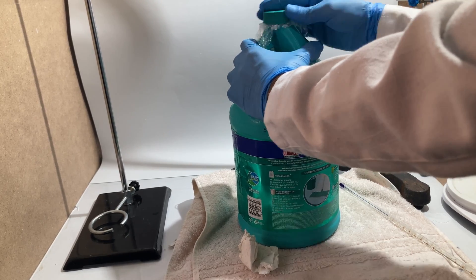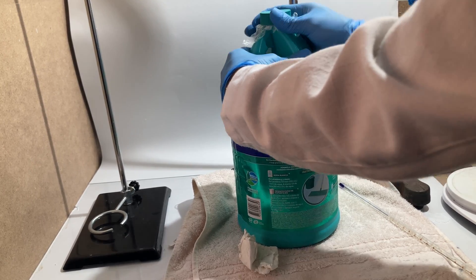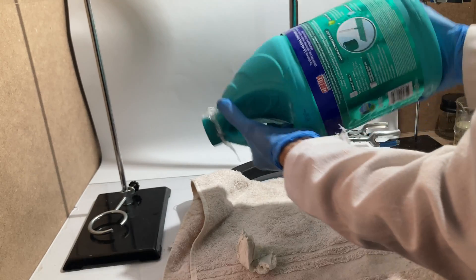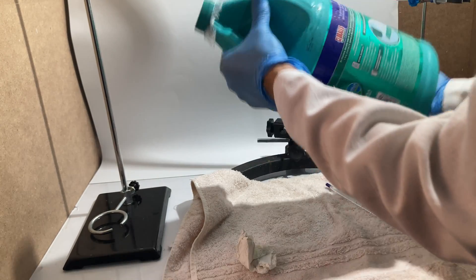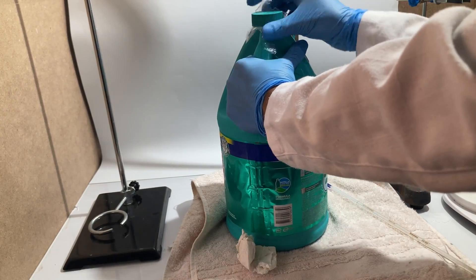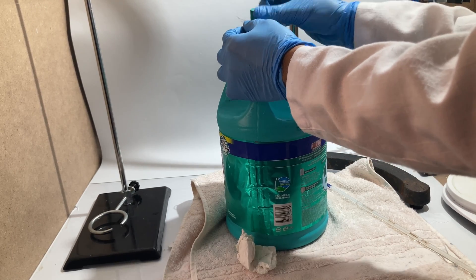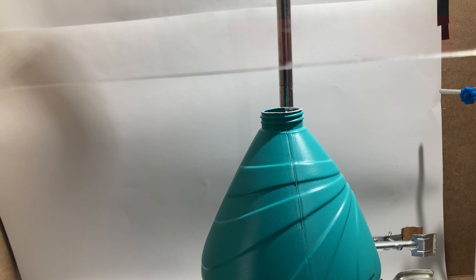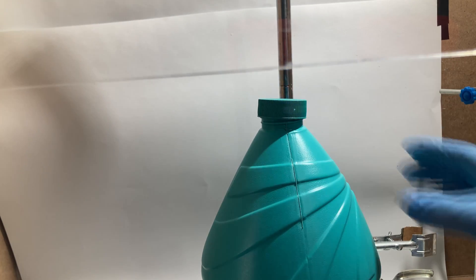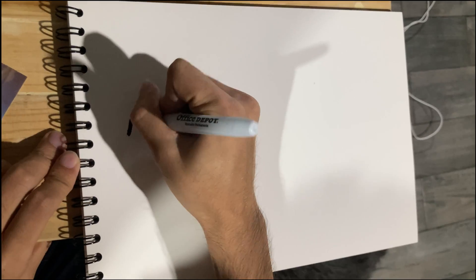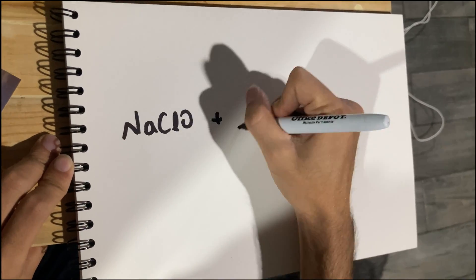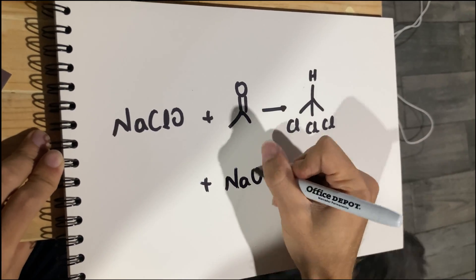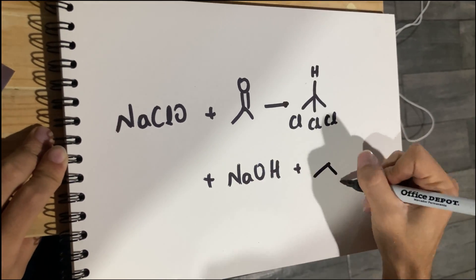I shook the bottle a few times, opening the cap and letting the gases escape. Then I measured the temperature again and in my case it didn't exceed 25 degrees. I let the bottle sit overnight to complete the reaction. The reaction between acetone and sodium hypochlorite produces chloroform, sodium hydroxide, and sodium acetate.